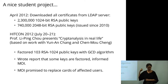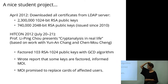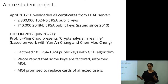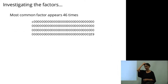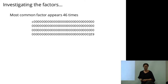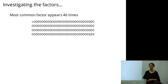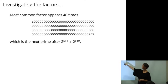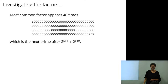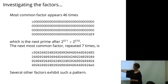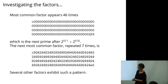About six months later, several co-authors found out about this and asked to see the factors. They sent us the keys and when we looked at the most commonly repeated factor, it was clearly not just not random — it's really, really not random. This is the next prime after 2^511 + 2^510, so the top two bits are set to 1 and then incremented to the next prime.